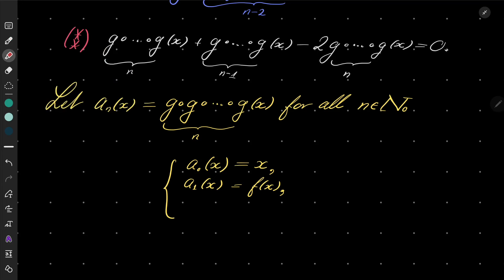And then using... I will mark it double asterisk. Double asterisk says that a_n(x) plus a_{n-1}(x) minus 2 times a_n(x) equals zero.